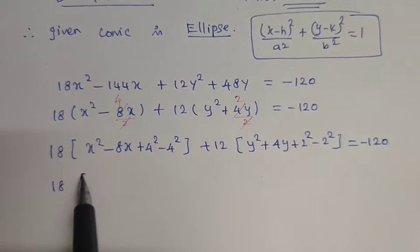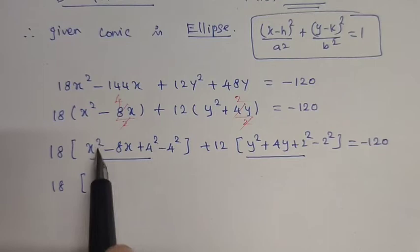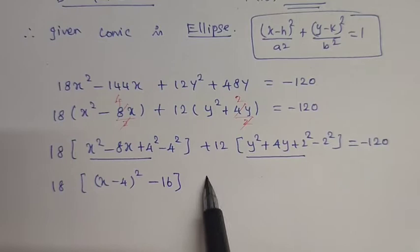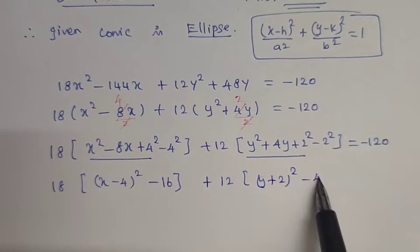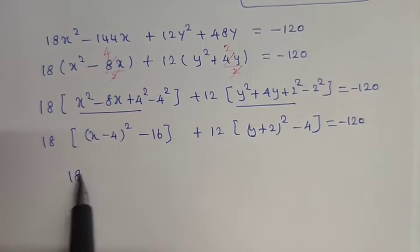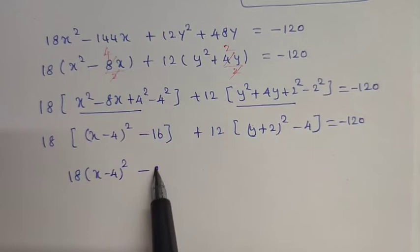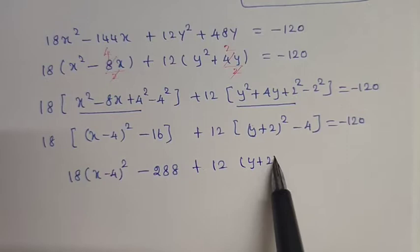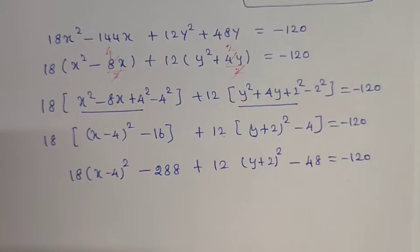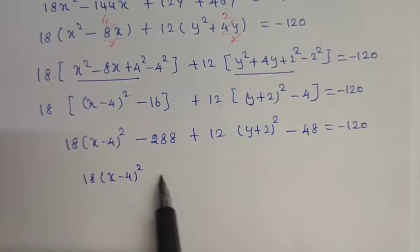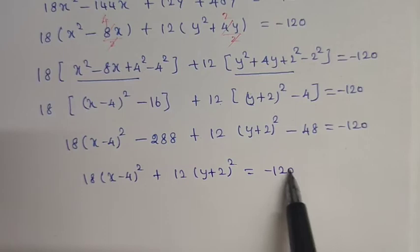We complete the square: 18 times (x squared minus 8x plus 4 squared minus 4 squared) plus 12 times (y squared plus 4y plus 2 squared minus 2 squared) equals minus 120. So: 18 times (x minus 4) squared minus 16, plus 12 times (y plus 2) squared minus 4, equals minus 120. This gives 18(x minus 4) squared plus 12(y plus 2) squared equals minus 120 plus 288.